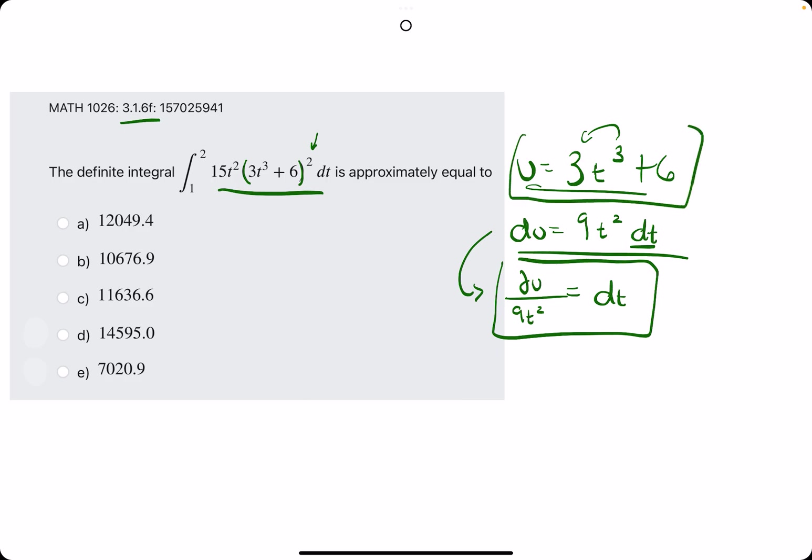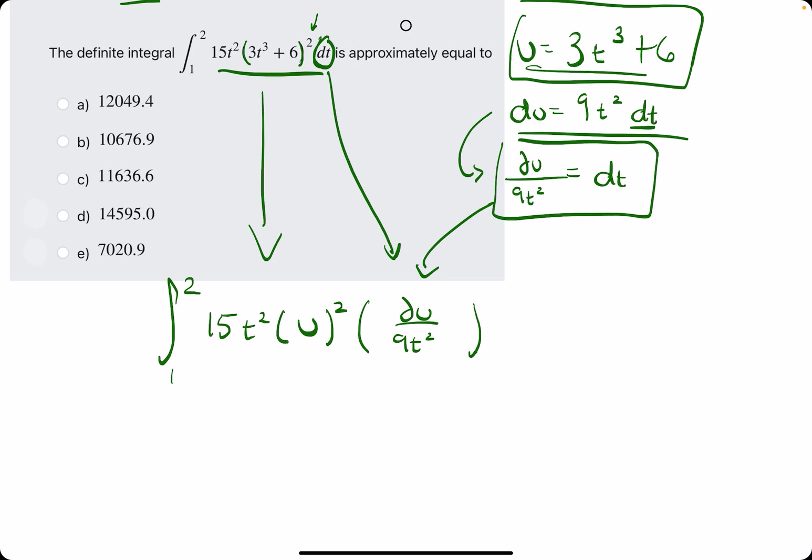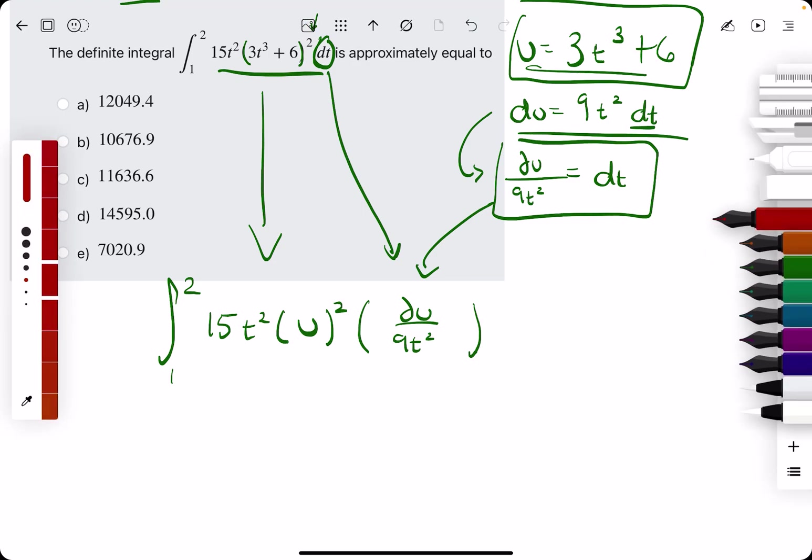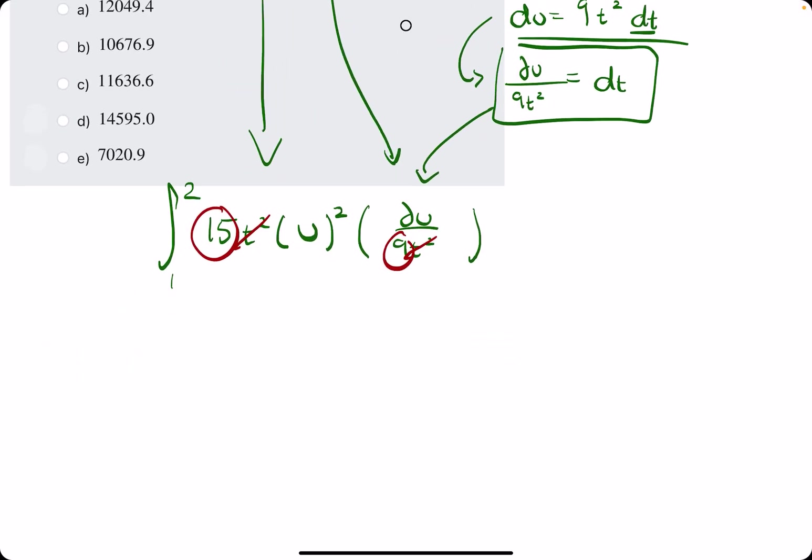Alright, so now, what we want to do is rewrite the integral. So we will rewrite this integral here in terms of u's and du's. So, we will keep this t term for the time being. We will plug in the u into the 3t³ + 6, and that is being squared in the original integral. And then, dt up here, we are replacing with du over 9t². So, now at this point, if we still have t terms, which we do, they should cancel out nicely and leave us with just u's and du's. So we have a t² divided by a t² essentially.